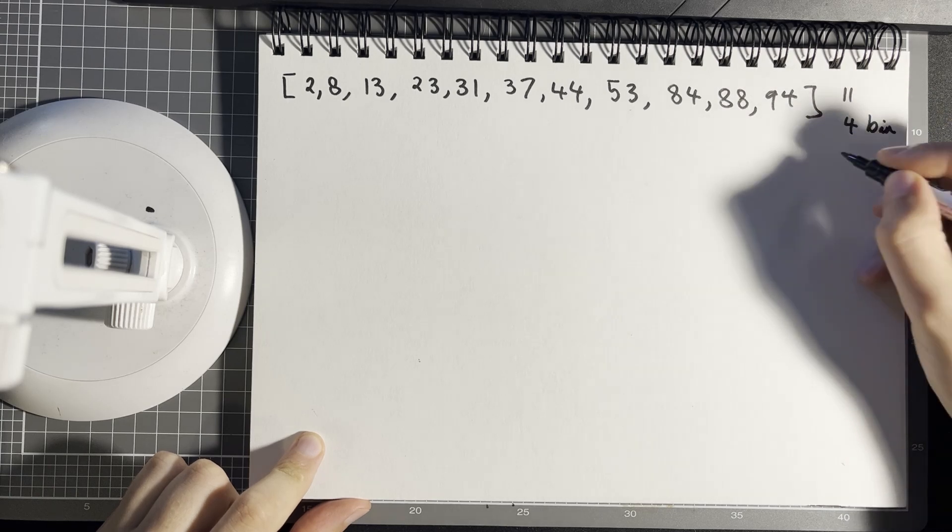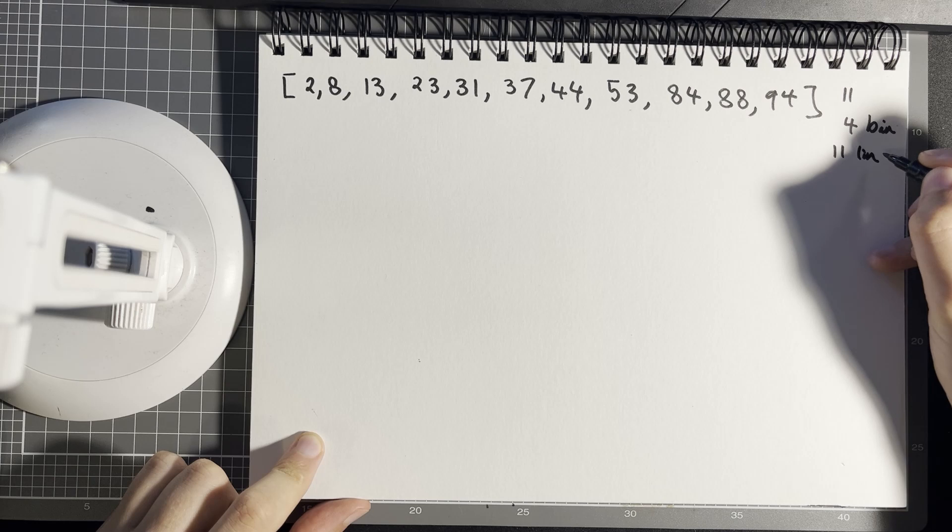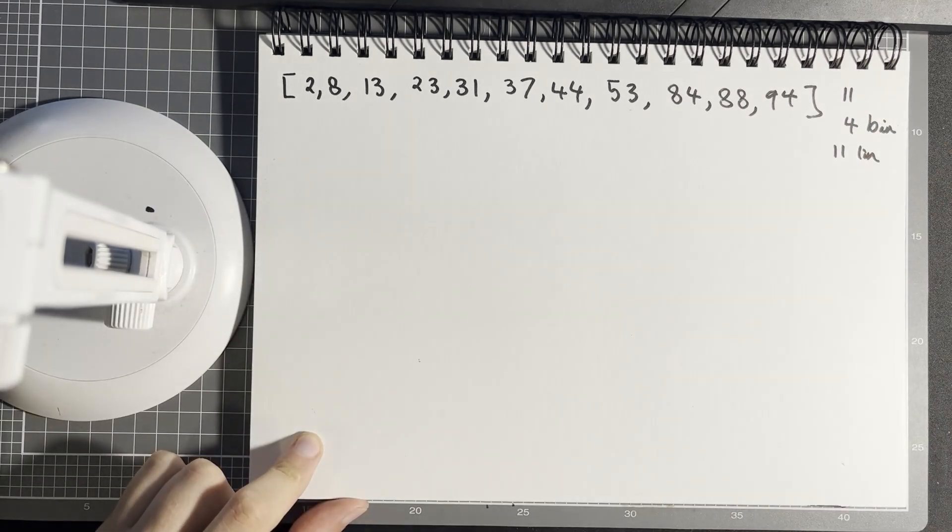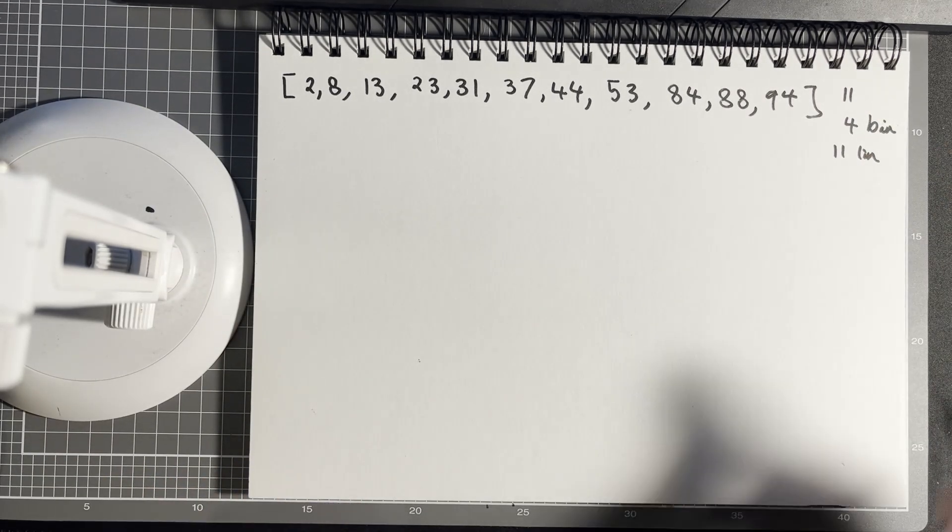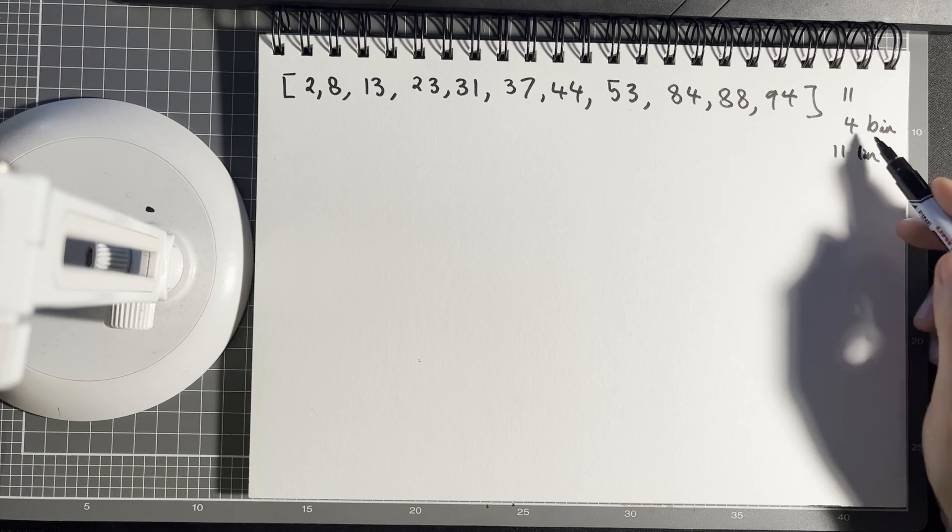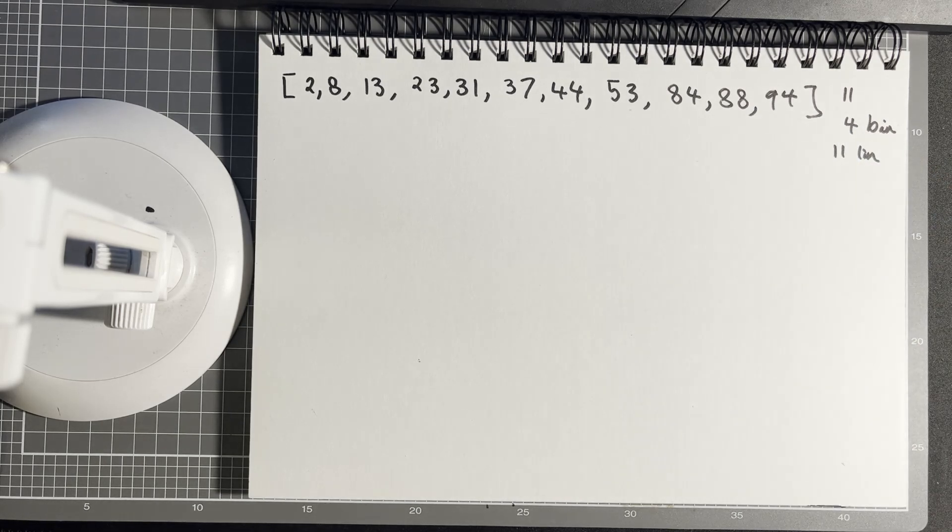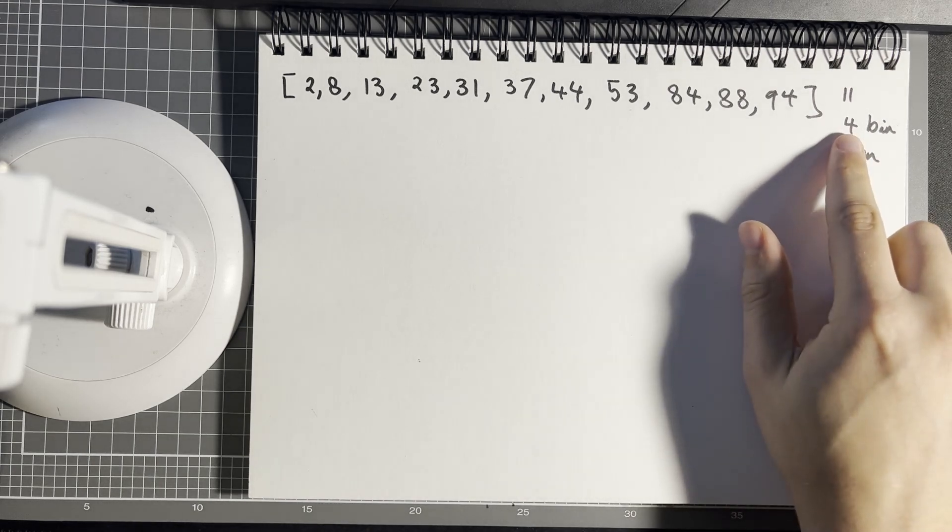And in the worst case for a linear search, I'd be looking through all 11 elements. So it looks like this is the winner, right?